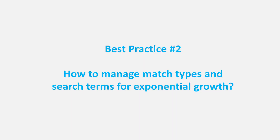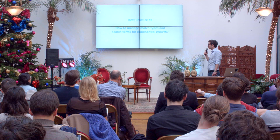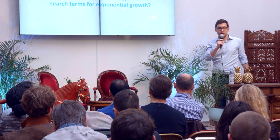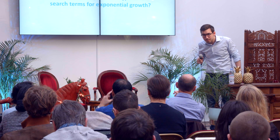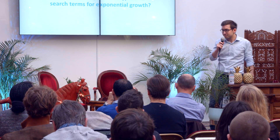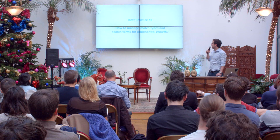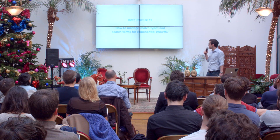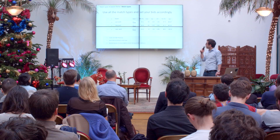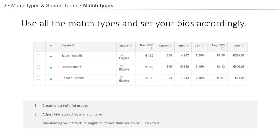Best practice number two: match types and search terms — really important topics in SEM. How to manage your match types and search terms for exponential growth. This is a typical ad group with several keywords. You have keywords bought in exact match, other keywords in phrase match, other keywords in broad modified match. There's one match type missing: broad match.